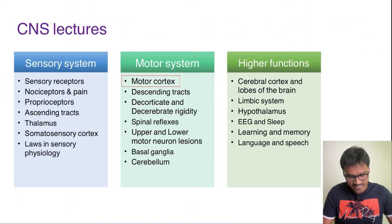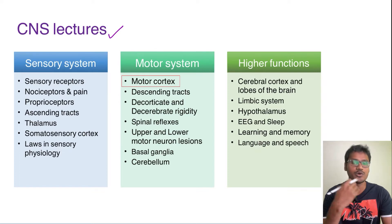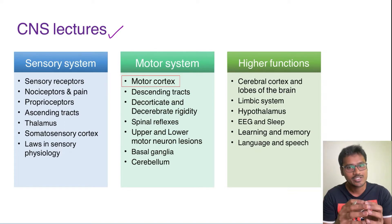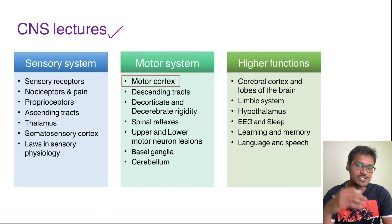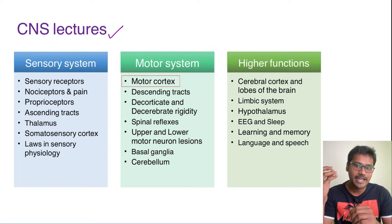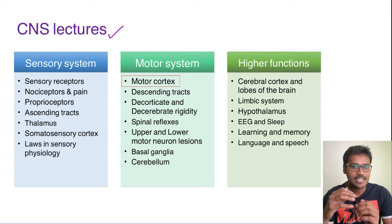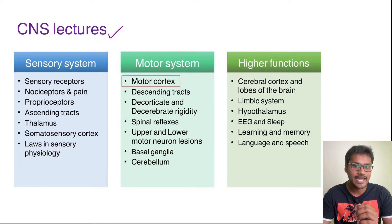We are discussing our CNS lectures wherein we started with the sensory system and have completed it in the previous video. In the sensory system, the receptors send impulses to the brain where they are perceived. In the motor system, the brain first decides what action to perform, then sends its descending tracts so the action can be performed.